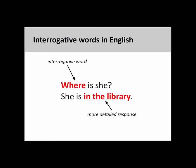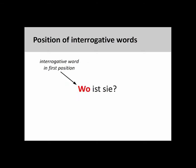Interrogative words are used to introduce a question. Unlike simple yes-no questions, interrogative words require a more detailed response. In the sentence you see on the screen, the interrogative word 'where' inquires about the position of the subject. The more detailed response to the question is provided by the prepositional phrase 'in the library.' In German, like in English, the interrogative word comes at the beginning of the sentence.